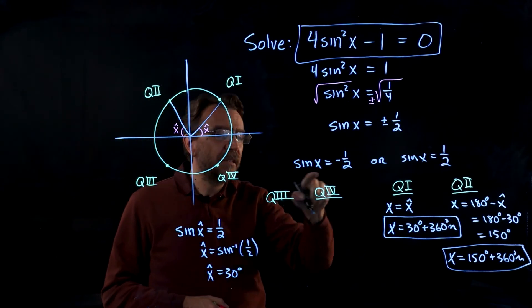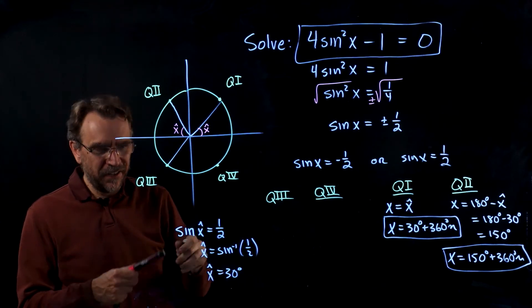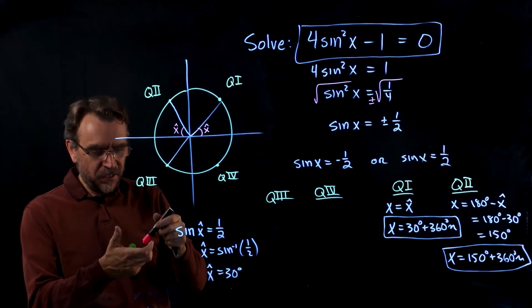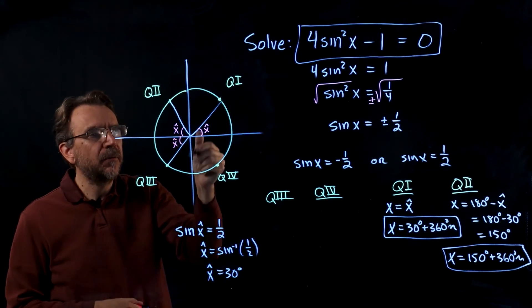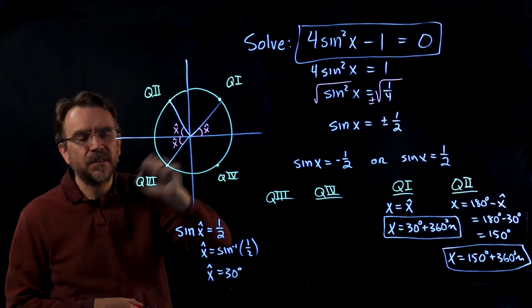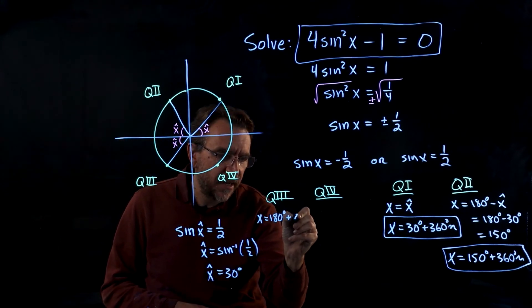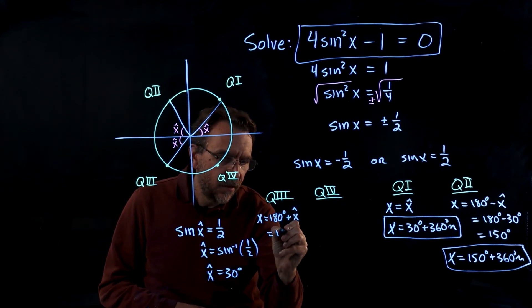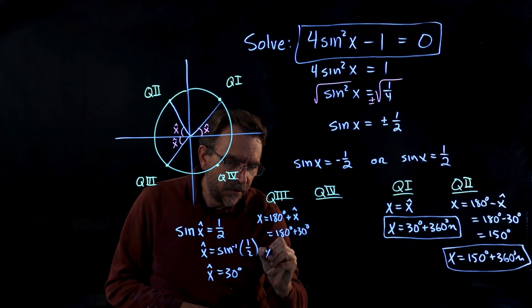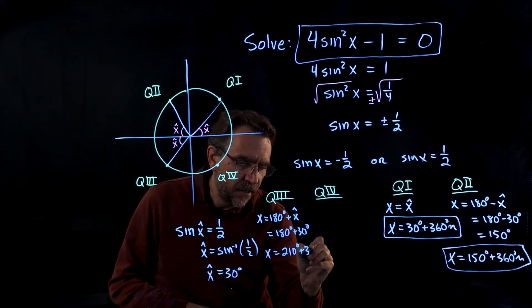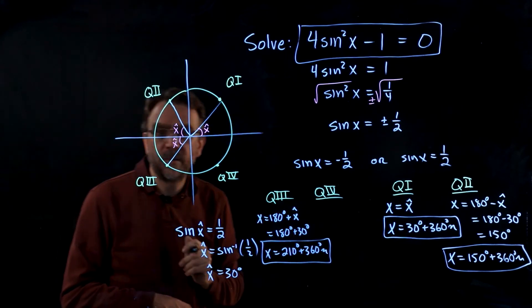Now let's move over to this equation where we have sine x equals negative 1 half. So sine is negative down here first in q3. And the reference is right here. So to get that angle, what we're going to do is take 180 degrees plus the reference angle. So x equals 180 degrees plus x hat or 180 degrees plus 30 degrees. So x equals 210 degrees. And then I'll add 360n to that and get infinitely many answers, co-terminal in q3.